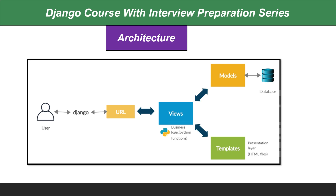The URL controls which functionality runs at each endpoint. The View gets information from the database via the Model and sends it to the Template. These four things — urls.py, views.py, models, and templates — are the core of the MVT pattern, which is very important for Django and many other web frameworks. You have to understand this properly to work more effectively.